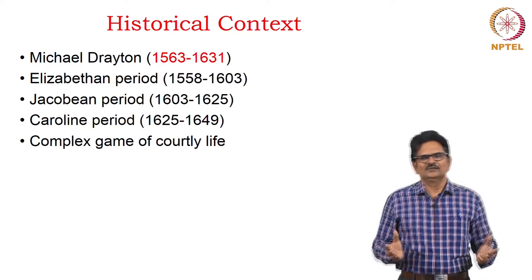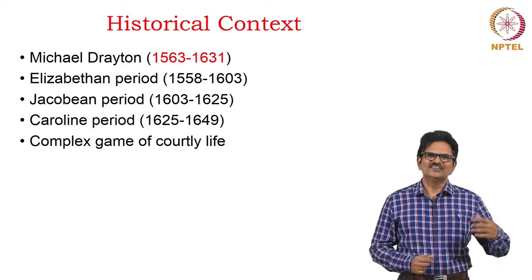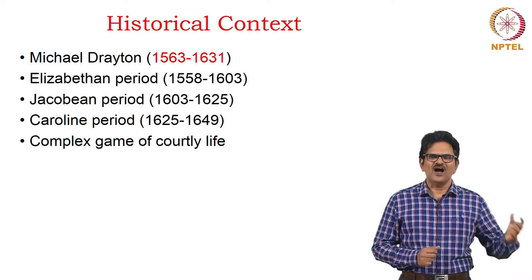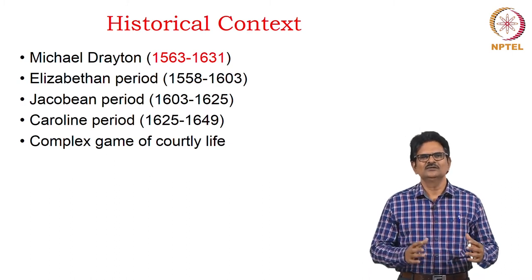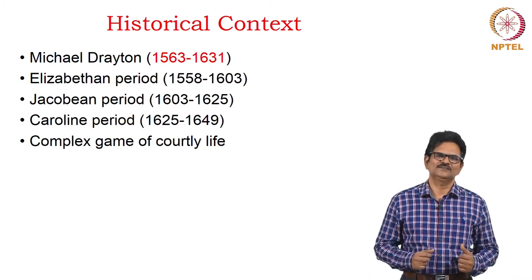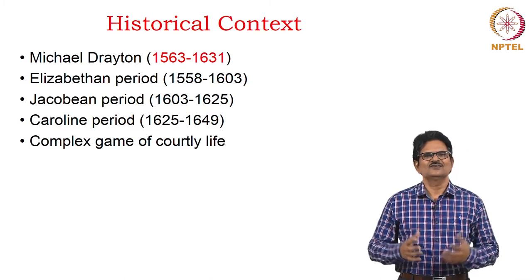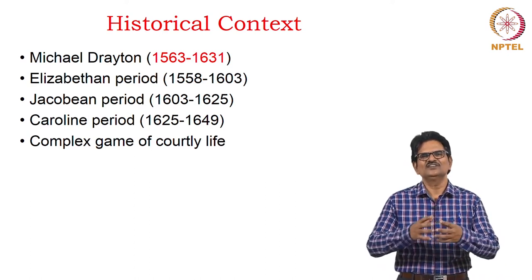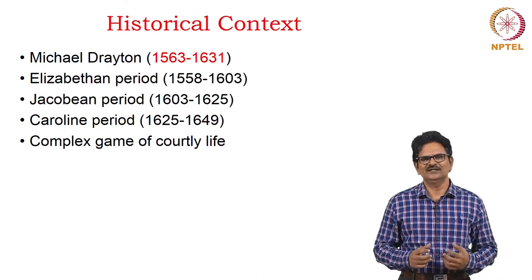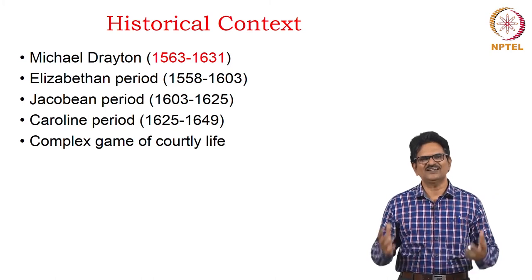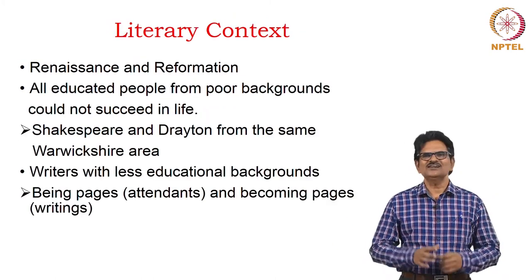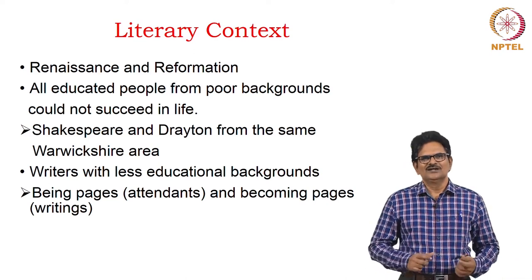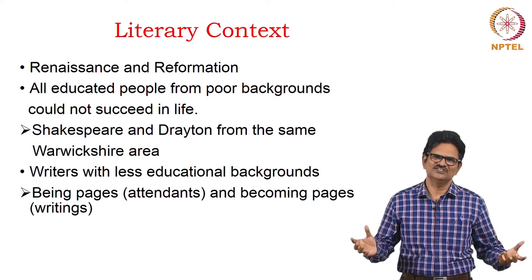This period had a complex game of courtly life. Elizabeth had a stable administration, but after her there was some stability in the beginning, followed by many disturbances due to religious factions and fights between Catholics and Protestants. Michael Drayton found this courtly life to be too difficult, but he was able to manage to get some kind of patronage throughout his life. The literary context is all about Renaissance and Reformation — Renaissance in letters, Reformation in the church.